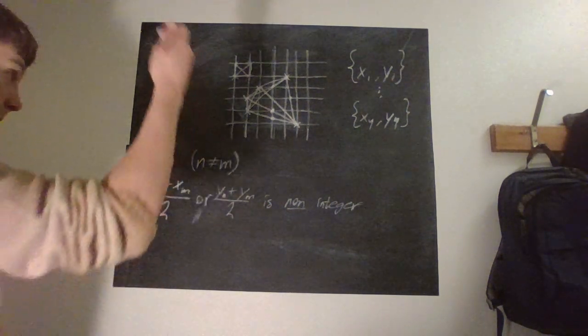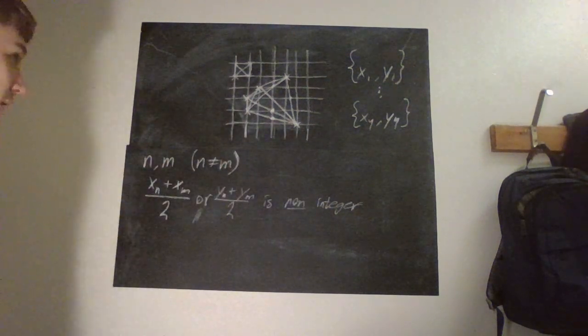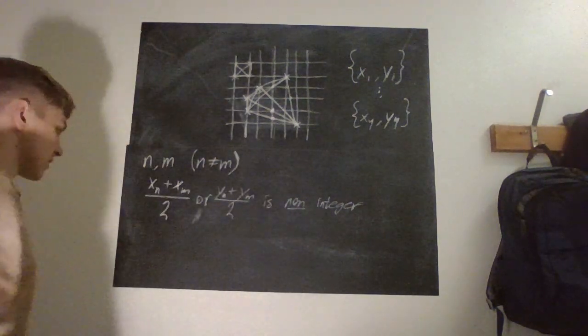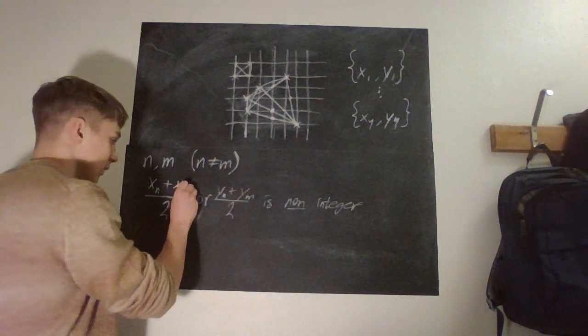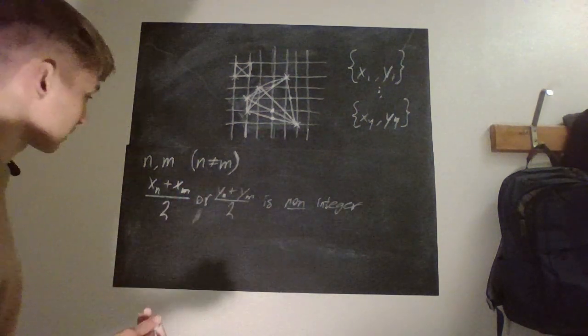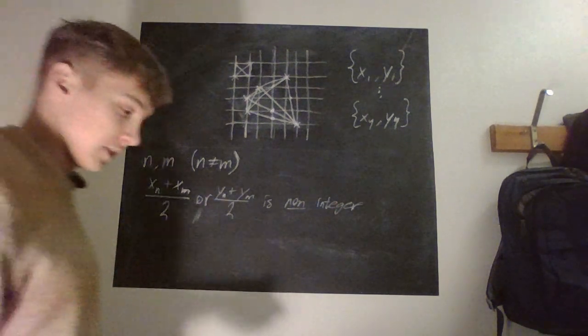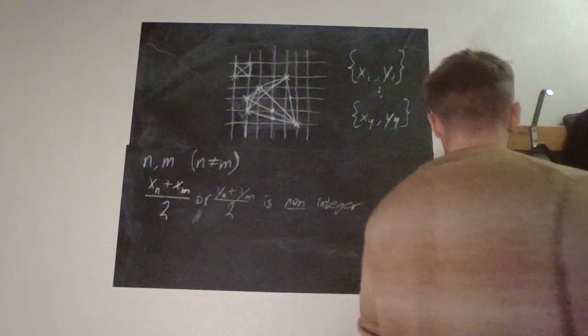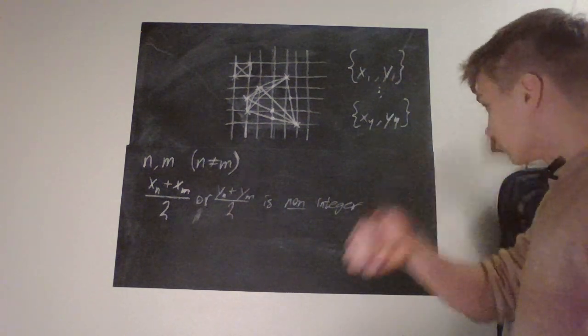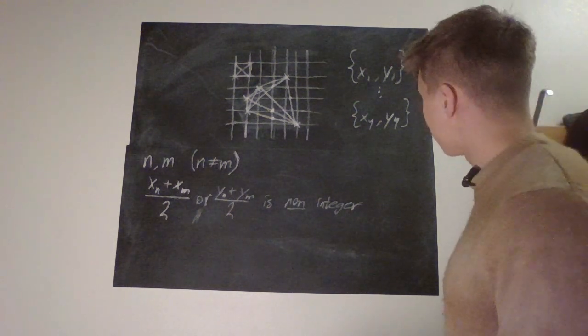So that's what our assumption means. So then let's look at our cases. Okay, so we have something plus something divided by two is supposed to be an integer or not. Then we can look at the evenness or oddity of all of these numbers.